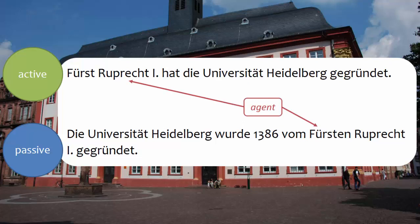Agent refers to the person who does the action — in other words, the person who has agency. Goal refers to the person or thing the action is directed to. In sentences in the active, the agent is rendered as the subject and goes into the nominative, and the goal is rendered as the direct object and goes into the accusative.